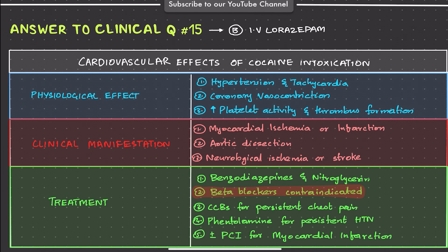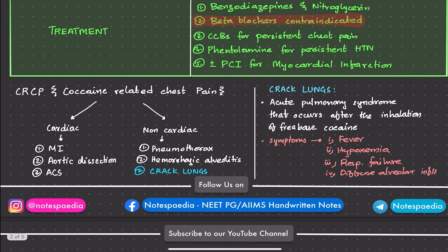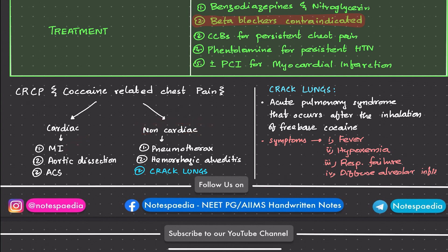This patient has chest pain, referred to as cocaine-related chest pain, or CRCP. CRCP can be of two types: cardiac and non-cardiac. The cardiac type can include myocardial ischemia, aortic dissection, or acute coronary syndrome. Aortic dissection is a concern because cocaine increases blood pressure, leading to hypertension, which can cause dissection. To rule out aortic dissection, you check both arm blood pressures — if the difference in systolic BP is more than 20 mmHg, consider acute aortic dissection.